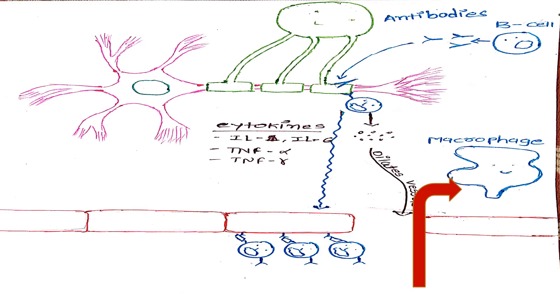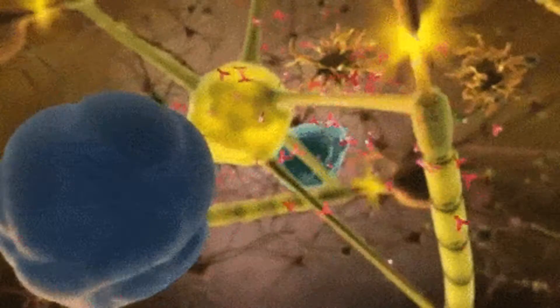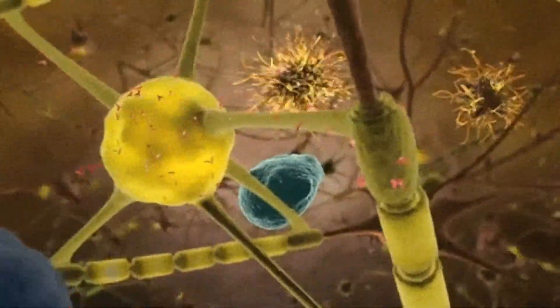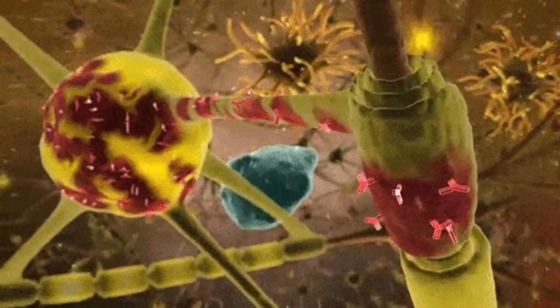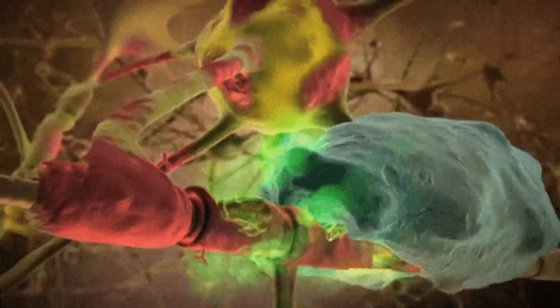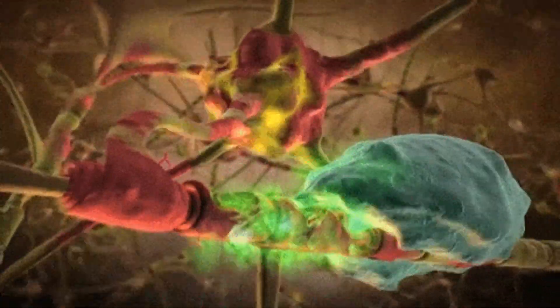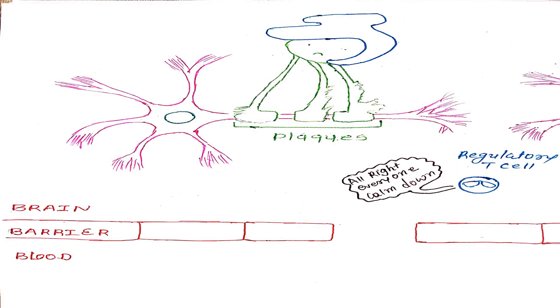These cytokines also attract B cells and macrophages as part of the inflammatory reaction. Those B cells start to make antibodies that mark the myelin sheath proteins. And then macrophages use those antibody markers to engulf and destroy the oligodendrocytes. Without oligodendrocytes, no myelin covers the neuron and this leaves behind scar tissue. This scar tissue is also known as a plaque or sclerosis.